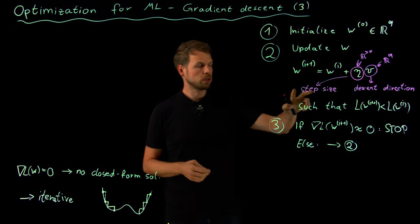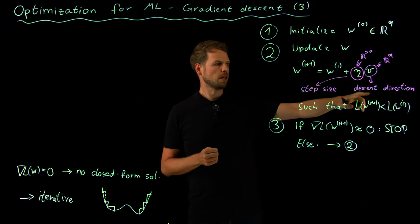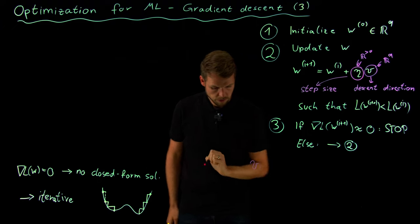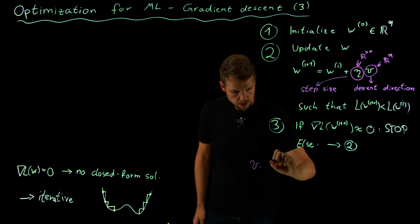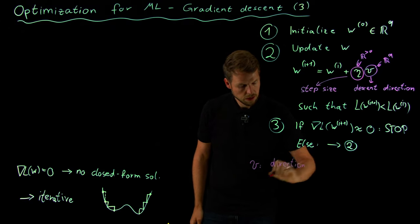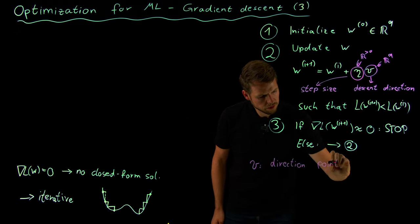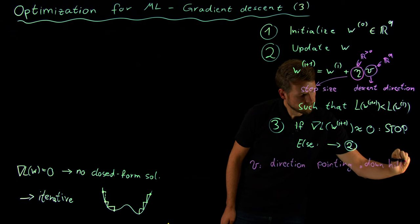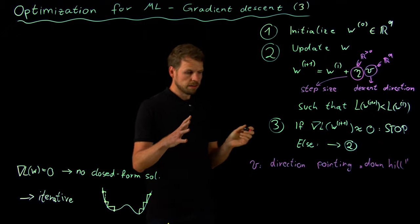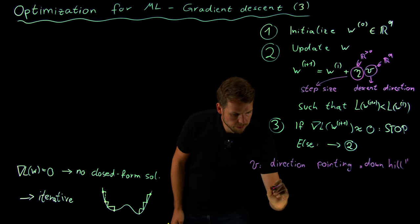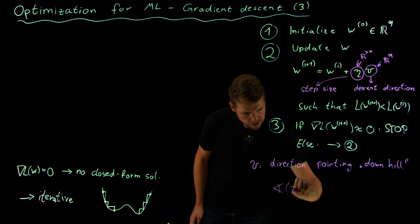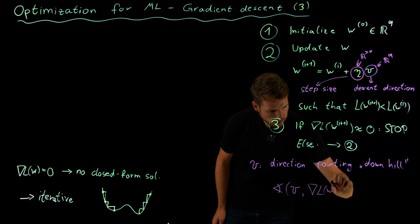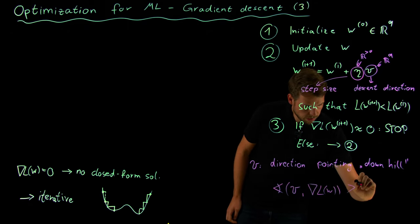The next video will be all about the step size, but this one is about the descent direction. What does descent really mean? It means a direction pointing downhill — specifically, the angle between the descent direction v and the gradient of the loss function has to be greater than 90 degrees.